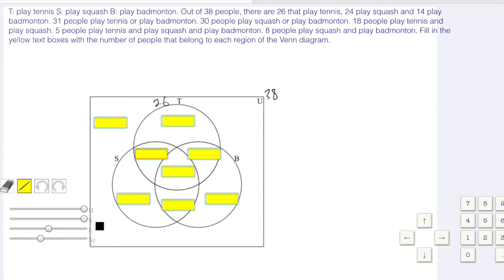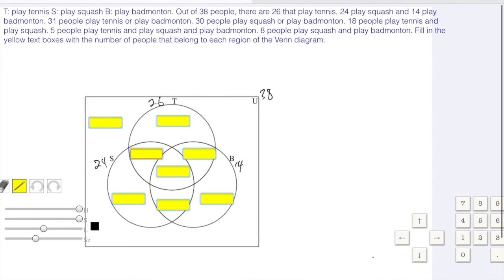38, 26 play tennis, 24 play squash, so I'm going to put 24 beside the S. And 14 play badminton, so I'm going to put a 14 beside the B. 31 play tennis or badminton. Tennis or badminton, that's inside the T and the B circle. So I'm going to put a 31 right beside here.